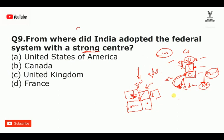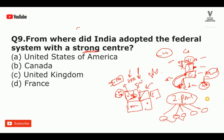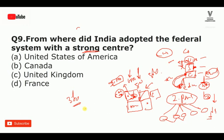In the USA, you have dual citizenship — state citizenship and federal citizenship. For example, if you have New York citizenship, you also have US citizenship. But in India it is different — India has a single citizenship, not dual citizenship like the US.